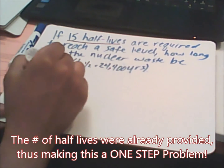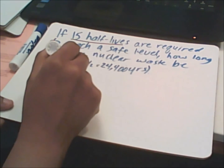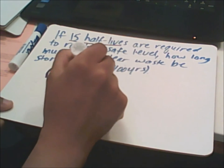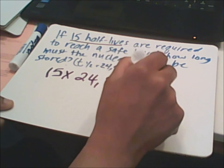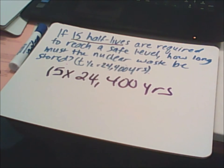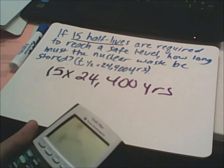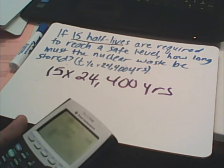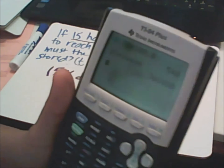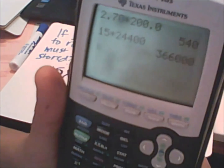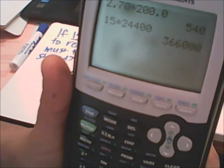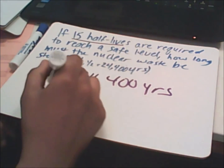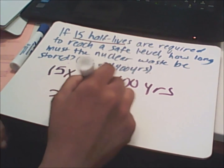All I'm going to do is take the 15 half-lives given in my problem and multiply that times 24,400 years. Using the calculator: 15 times 24,400 gives us 366,000 years.